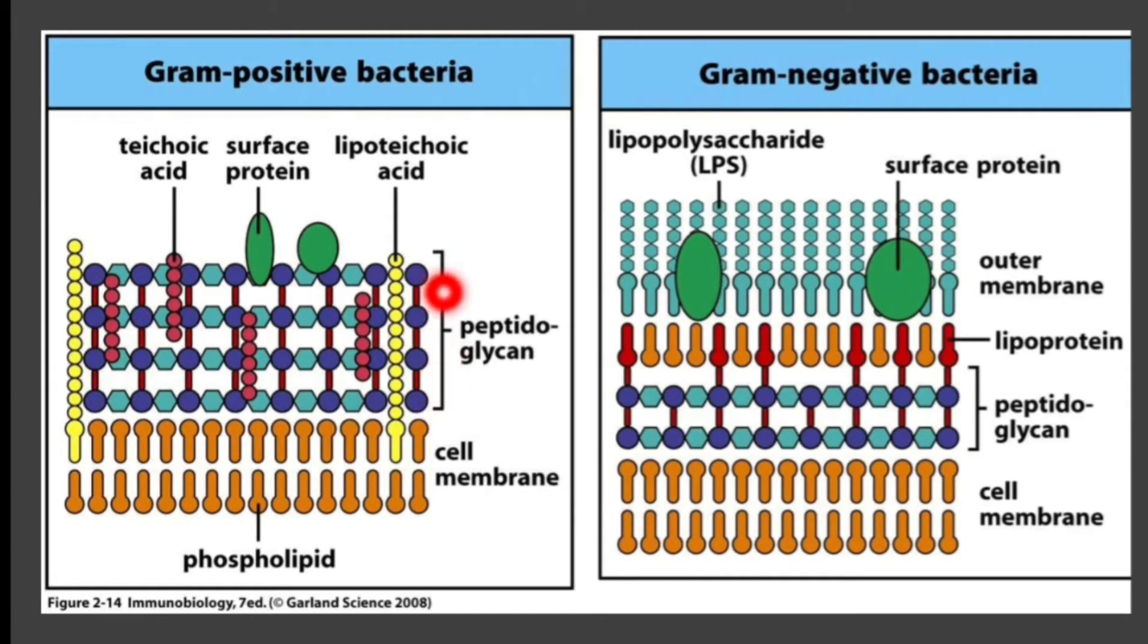That's why on gram staining it will stain blue-violet, because it takes up the dye. Look at the thickness in gram-negative bacteria - there is thin peptidoglycan, so this one will take up the second dye, and in this case it will turn pink or red.